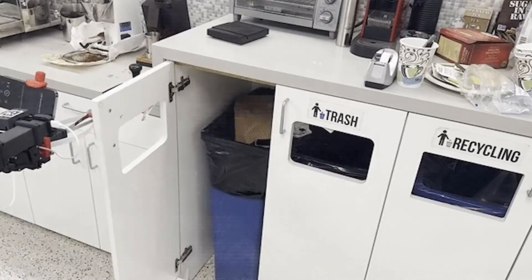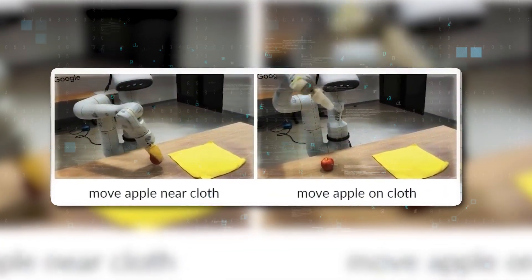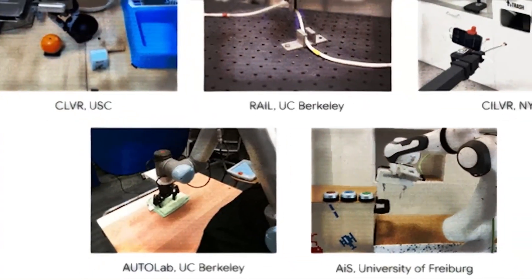And not only these were results that the researchers could be proud of, the robots began understanding intricate details. For instance, they could tell the difference between placing an apple near a cloth versus on the cloth. A distinction that seems simple to us, but is a huge leap for a robot.